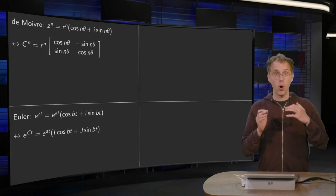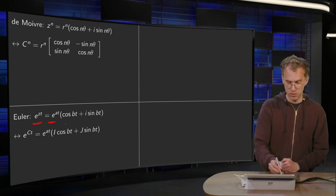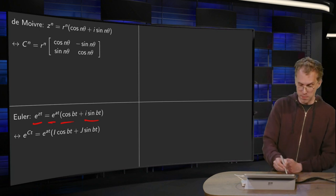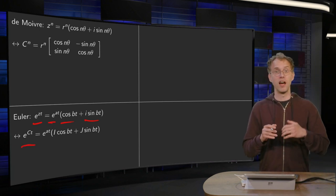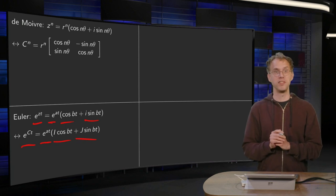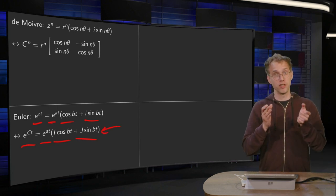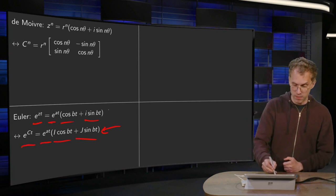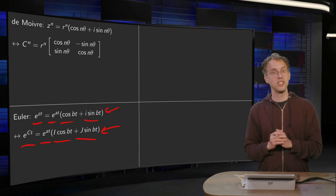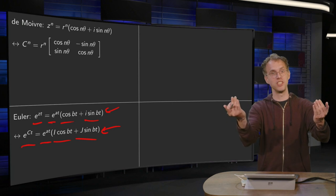Finally, we have the Euler formula for complex numbers: e to the power zt equals e to the power at times (cos bt plus i times sin bt). And we have seen the matrix exponential function e to the power Ct, which is very similar: e to the power at times (identity matrix times cos bt plus J times sin bt). So an easy way to memorize the matrix exponential for a C matrix is to use the Euler formula for complex numbers and convert it, exploiting the similarity between complex numbers and scaling rotation matrices.